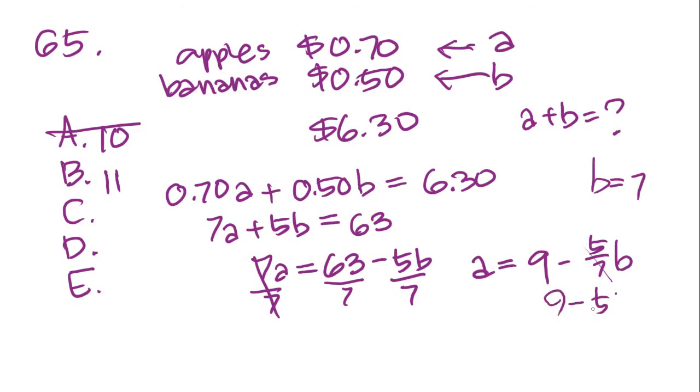It's got to be divisible by 7, so let's try 7. If B were 7, then it would be 7 over 7, we cancel that out, and you would have 5 bananas. But then A would be 9 minus 5, and A would be 4. If A equals 4 and B equals 7, those are nice whole numbers and they do add up to $6.30. 7 plus 4 is 11. So B is the correct answer. I'd say 65 is one of the more difficult questions.